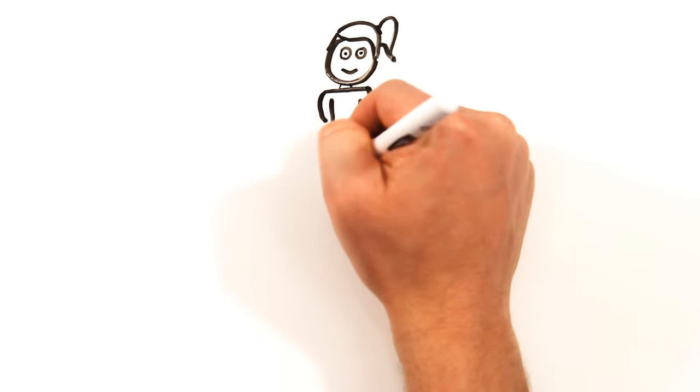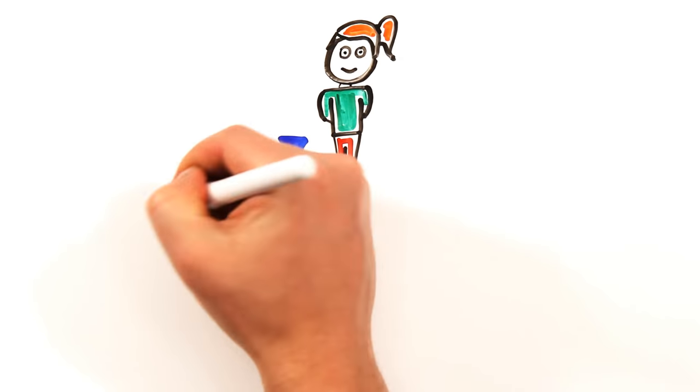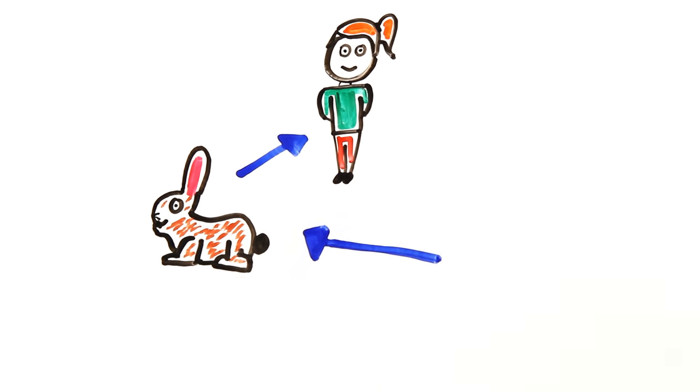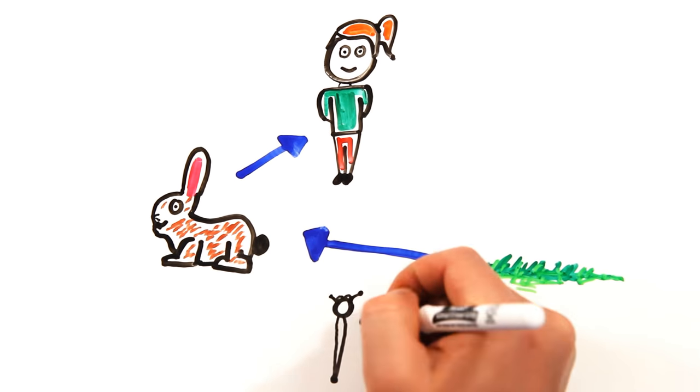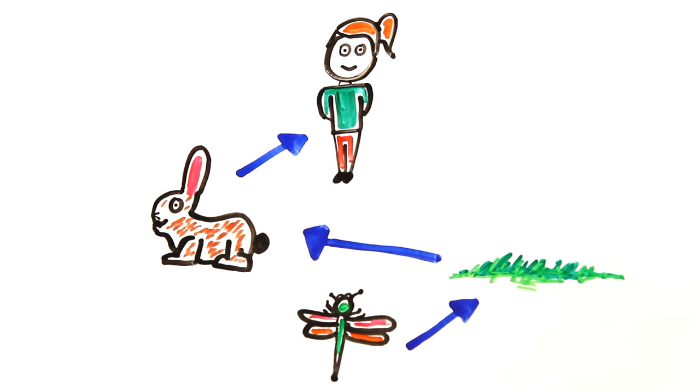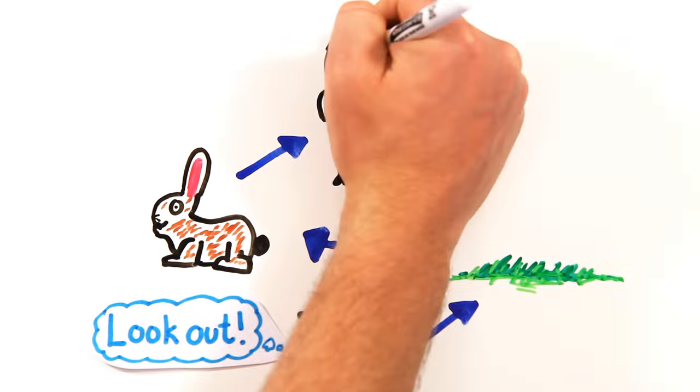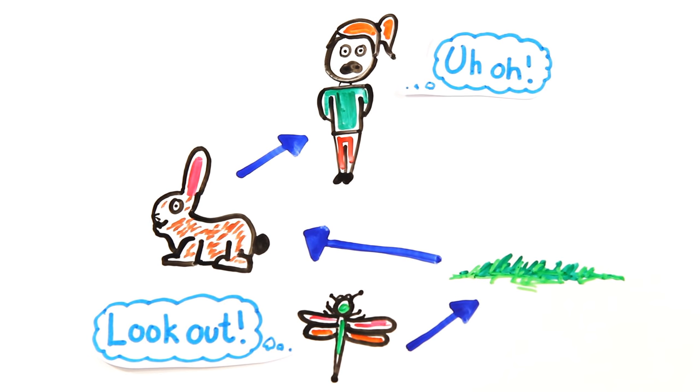And while all the mass extinctions of the past have had some survivors, it's worth remembering that the creatures at the top of the food chain are usually hit the hardest. We may just be setting the stage for history to repeat itself, and for some small, unexpected organism to replace us as the planet's dominant form of life.